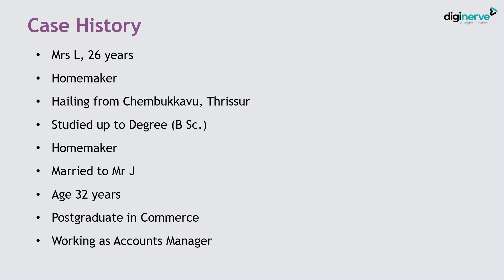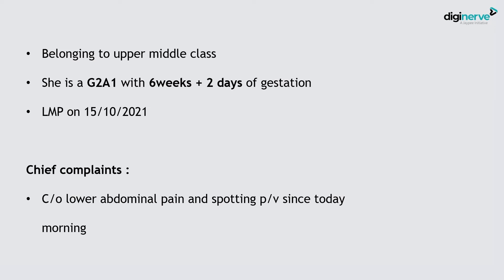I am presenting a case of Mrs. L, a 26-year-old homemaker hailing from Chambu, Kavo, Trishur, studied up to degree, married to Mr. J, a 32-year-old postgraduate in commerce working as an accountant/manager, belonging to upper middle socioeconomic class. She is a Gravida 2, abortion 1, with 6 weeks and 2 days gestation.